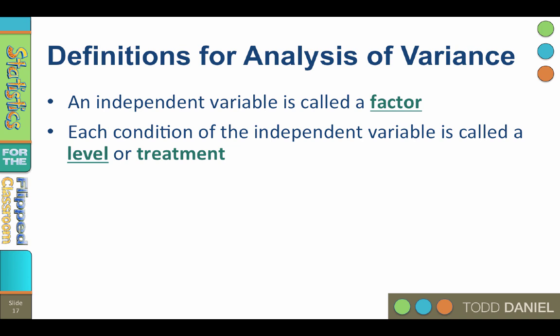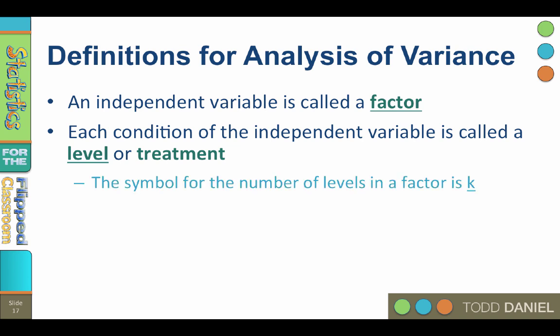If the factor is exercise, then the levels might be a control group with no exercise, 2.5 hours of exercise per week, and 5 hours of exercise per week. If the factor was something about sleep, then the levels might be low, medium, and high levels of sleep. The symbol for the number of levels in a factor is k, and the number of subjects in the factor is n, just like we've always used for sample size.